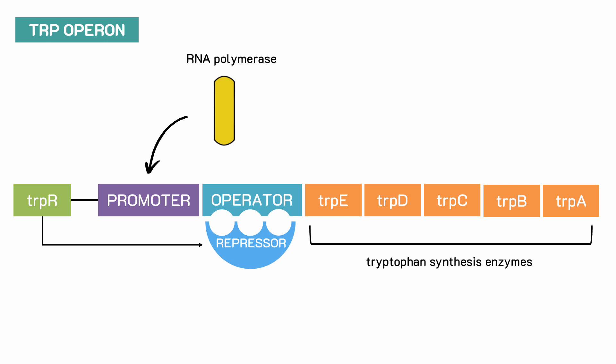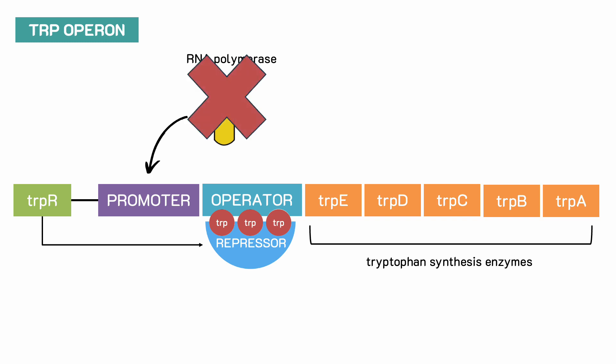When there's a high concentration of tryptophan and it is useless to synthesize more, tryptophan binds to the repressor which gets activated and binds to the operator. This blocks the RNA polymerase and therefore the transcription of the enzymes, and as a result no new tryptophan is synthesized.